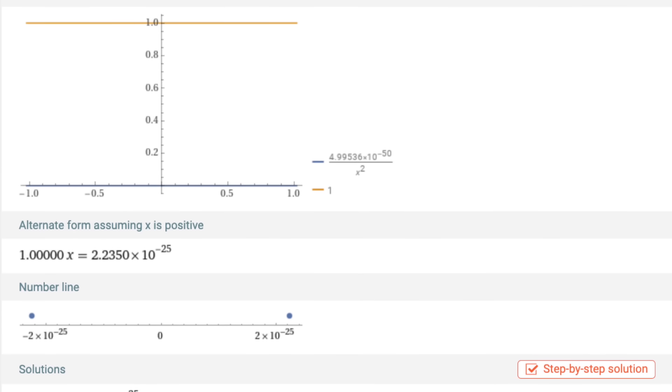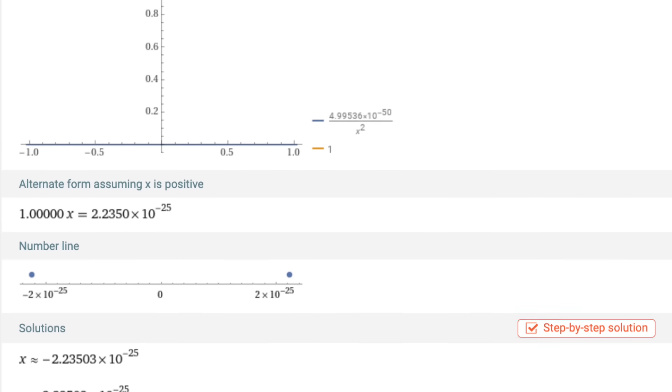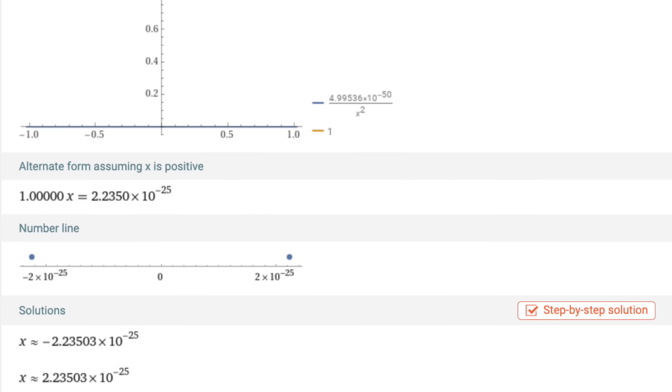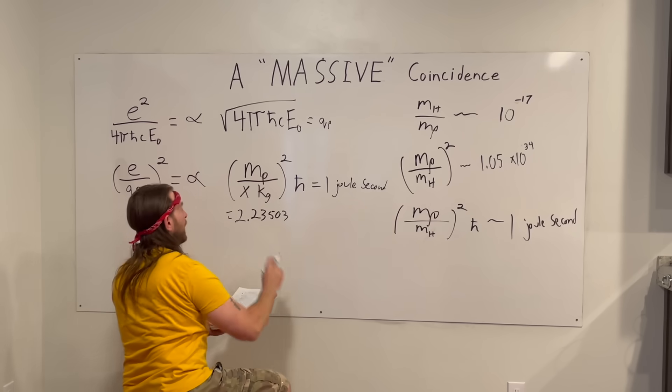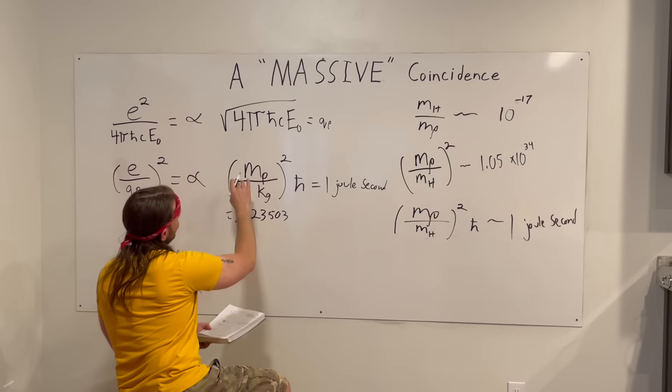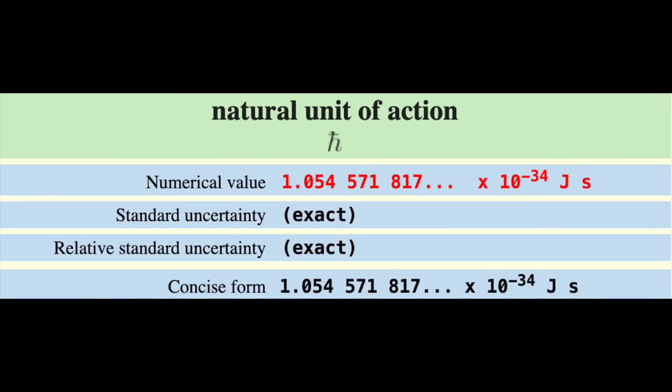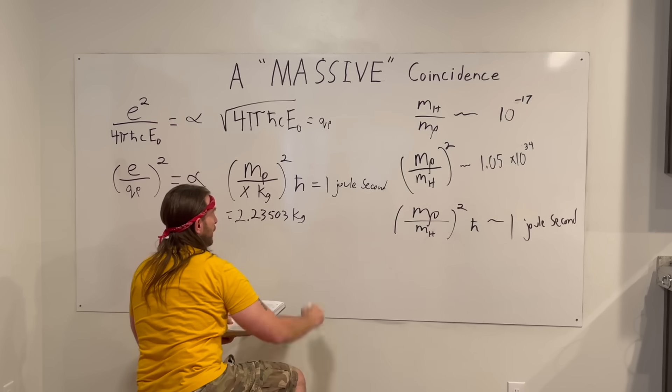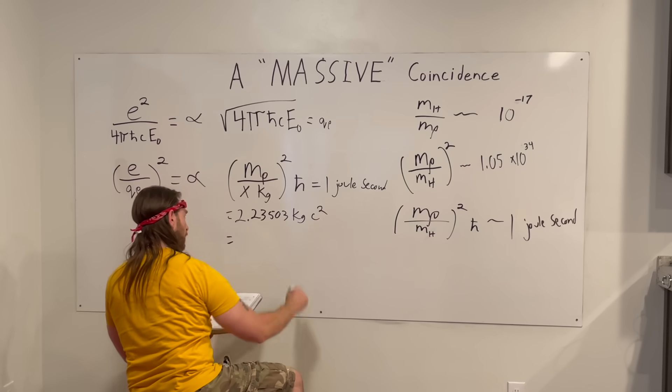is 2.23503, and that's using all the numbers from CODATA recommended for the Planck mass. So that gives us an output of six digits here, and that was in searching for kilograms, and then multiply by c squared. Oh, yep.